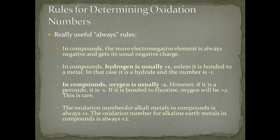The next rules are called the 'always rules.' These help you figure out one element first, and then you can figure out the rest. In a compound, the more electronegative element is always negative and gets its usual negative charge. For example, in HF, fluorine is more electronegative than hydrogen, so fluorine's oxidation number is -1 (its usual negative charge). Then, since hydrogen plus fluorine must equal zero, hydrogen must be +1.